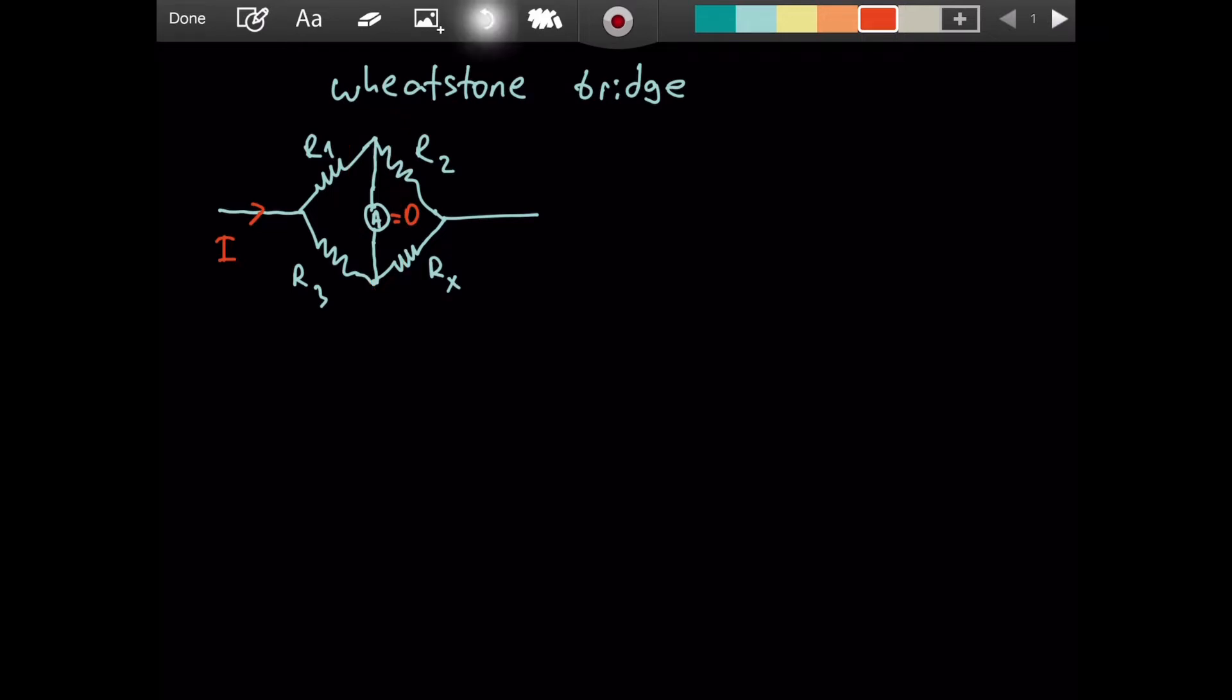You might say, how do we achieve this? If I were to take four resistors and connect them in this manner, I probably would not end up with zero amperes in this wire. And that's actually true. In practice, these three resistors that we know the resistance of, one of these would be a rheostat.